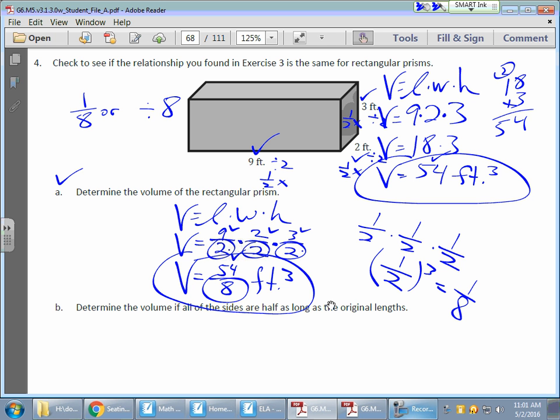Now, applying that to some other fraction, if I was going to take a third, right, take this and take a third of each, well, then I'm going to take a third, multiply that by a third, multiply that by a third. And I'm going to get 3 times 3, which is 9, 9 times 3, which is 27, which means I want 1 27th of the original volume. And that's kind of cool when you think about that.